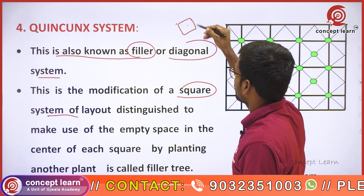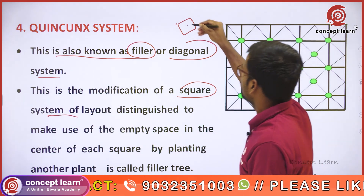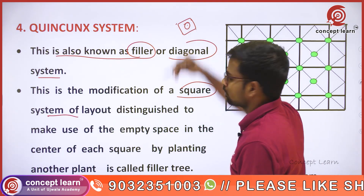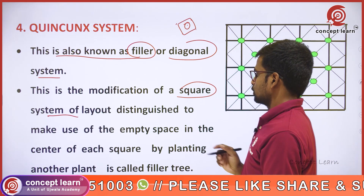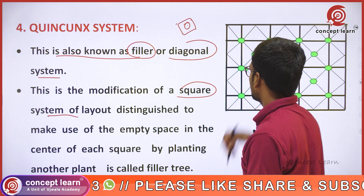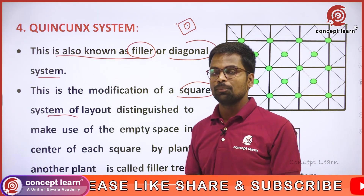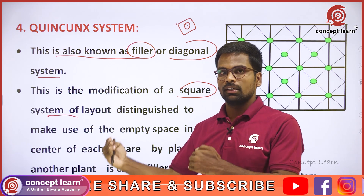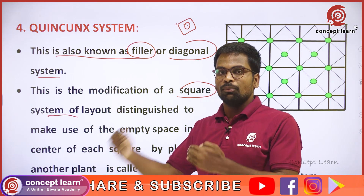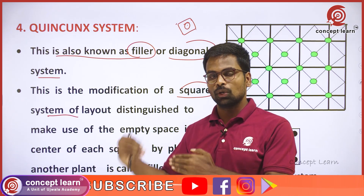In this empty space, we plan this. The name is Filler Tree. This Filler Tree quality is settled. Comparatively, the corner trees have a longer duration — this Filler Tree duration is less than that.